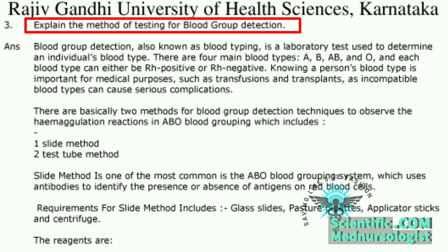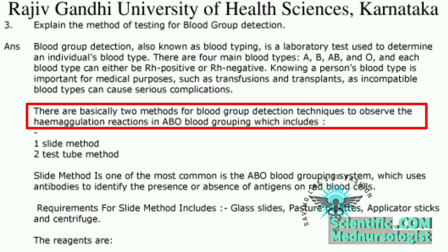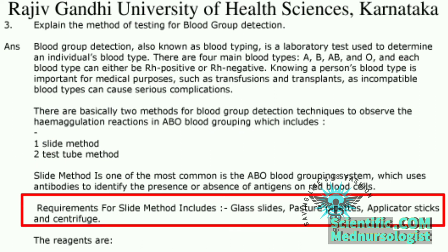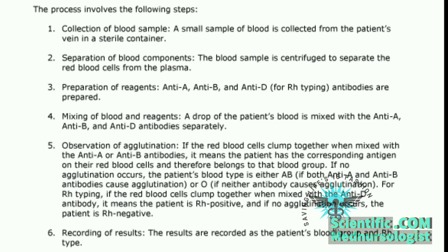The third question is: explain the methods of testing for blood group detection. The answer is there are basically two methods for hemagglutination reactions in ABO blood groups — the first is the slide method and the second is the test tube method. The slide method requires a glass slide, spreader, applicators, sticks, and centrifuge, as shown on the screen.